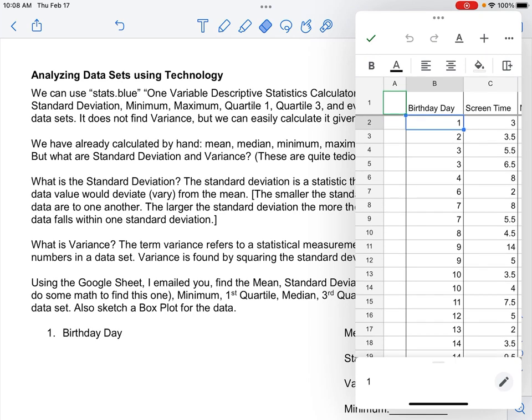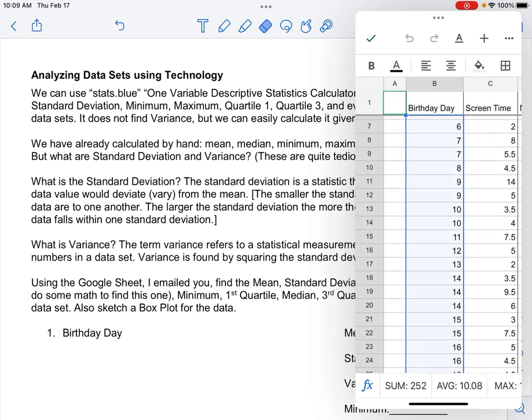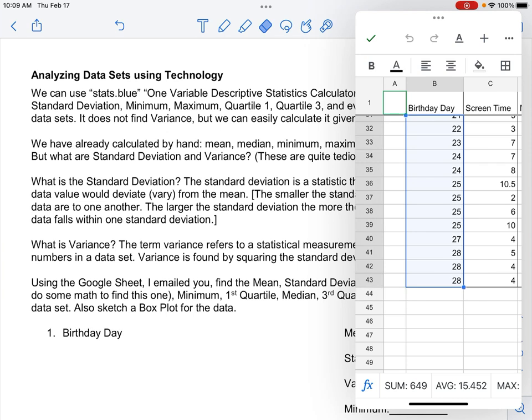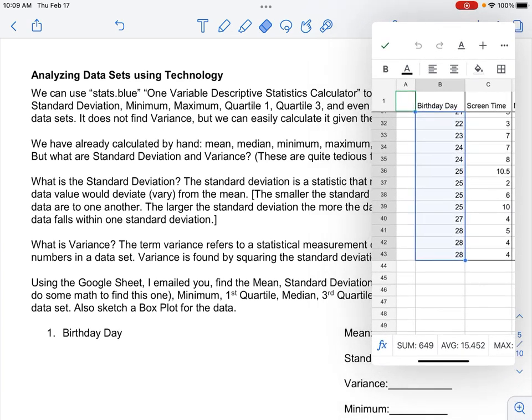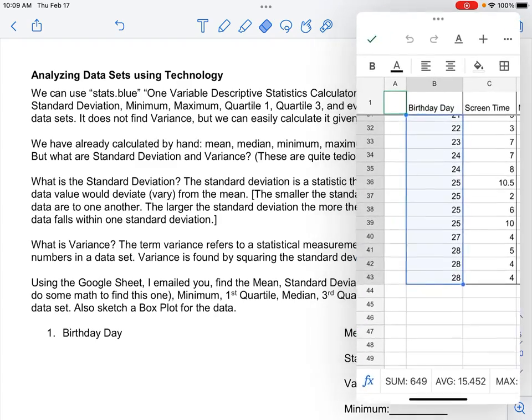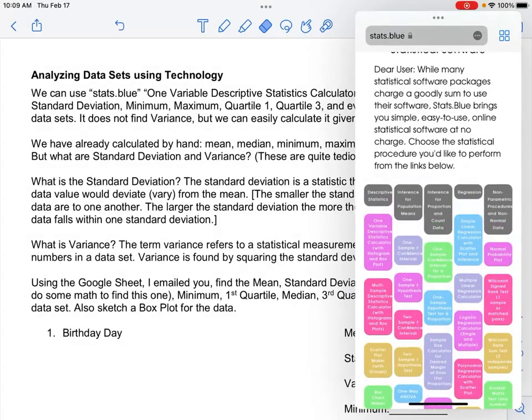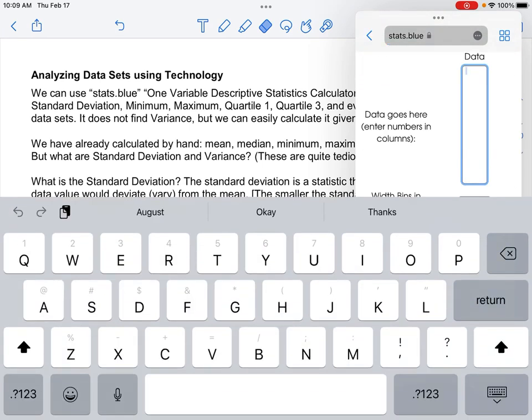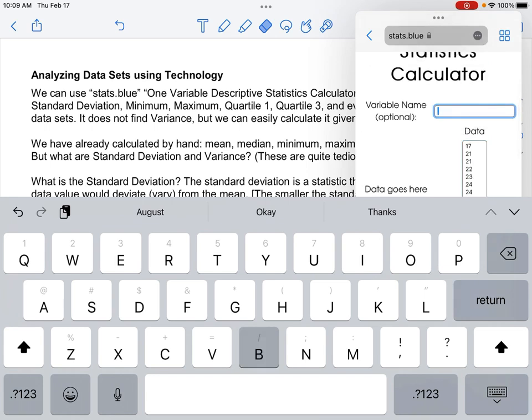So if you go to your email, you should find an email from me that has your Google sheet. Your numbers might be different than mine, so you might end up getting different things than I do. But it's still the same process. So I am going to copy this data set.